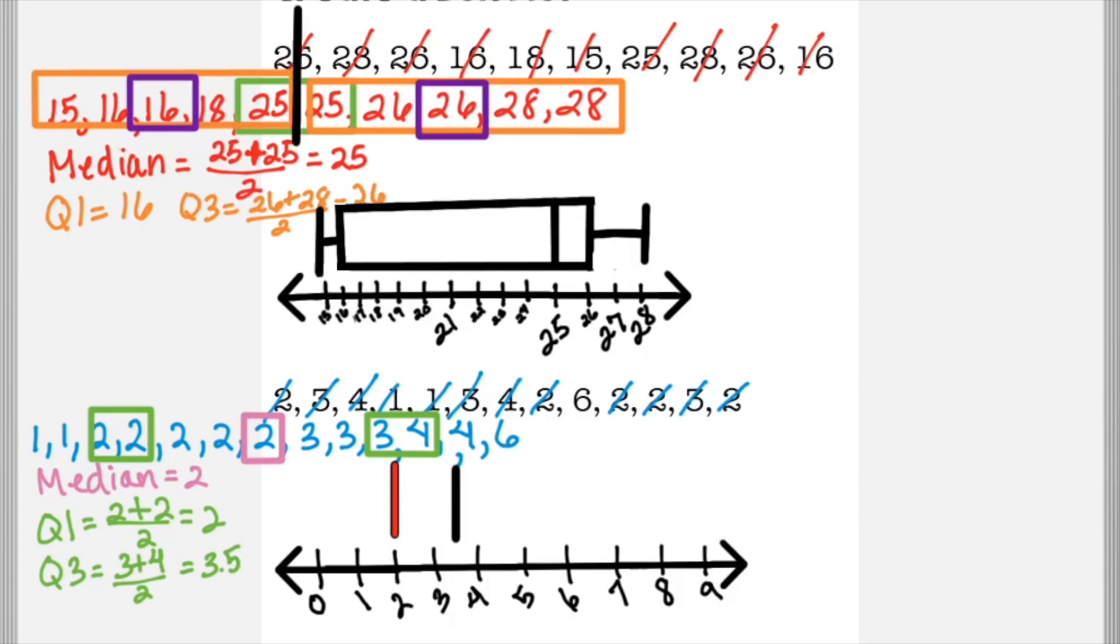We're going to make a line above two. Then find the median of quartile one, which has two in the middle. So we add two plus two and divide by two. There's also two in the middle for the right hand side, and that would be three plus four divided by two.